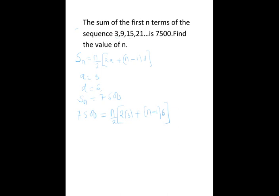Now we have 7,500 equal to n over 2 into 2 times 3, that is 6, plus when you remove the brackets here, we'll have 6n minus 6.